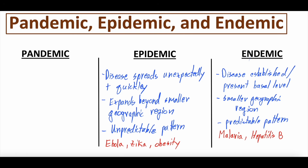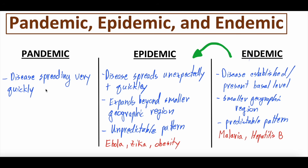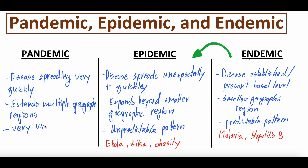Epidemics are, quote-unquote, worse or scarier or more robust than when things are endemic. Both of these are in comparison to a pandemic. A pandemic is when a disease starts to spread even more rapidly — spreading incredibly fast — and extends into multiple geographic regions. If something was contained in one or two states, it's now extended to the whole country, sometimes even the whole world. This is a very unpredictable pattern, and it gets really concerning because it might not be able to be contained in a reasonable way.